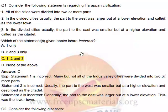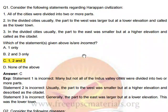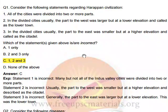Consider the following statements regarding Harappan civilization. All the cities in Harappan civilization were divided into two or more parts. In the divided cities, usually the part of the West was larger but at a lower elevation, called the lower town. The part of the East was smaller but at a higher elevation.